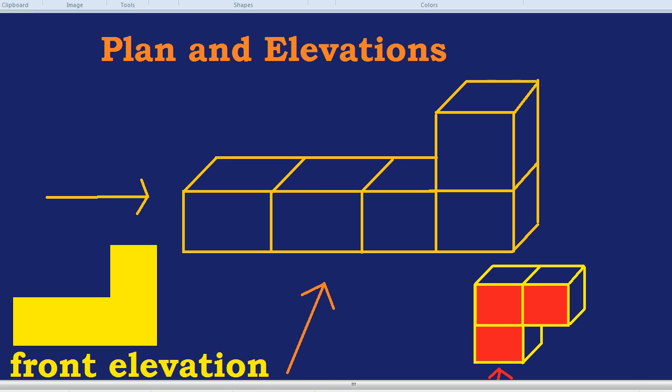Finally, the one the students find the hardest, the plan. The plan of the shape. What does plan mean again? It means the view from the top, so from a bird's eye view, not even at an angle like that. It's directly down like so. What would the view from a plane be of this shape?